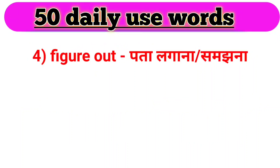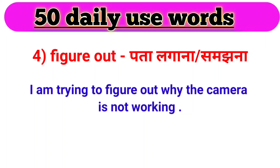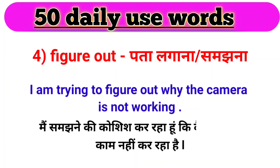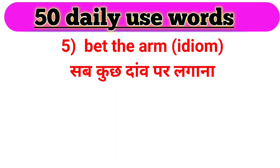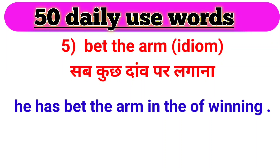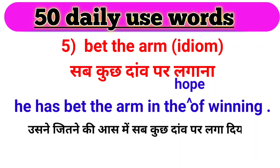Agla hamaara ek phrasal verb hai — figure out. Figure out ka matlab hota hai pata lagana ya samajhna. For example: I am trying to figure out why the camera is not working. Main samajhne ki koshish kar raha hoon ki camera kyun nahi kaam kar raha hai. Next, we have an idiom — bet the arm. Iska matlab hota hai sab kuch daao par lagana. For example: He has bet the arm in the hope of winning. Usne jeetne ki aas mein sab kuch daao par laga diya.